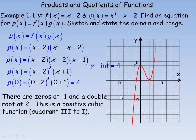So the function starts in the third quadrant, comes up and passes through the x-axis at negative 1. The y-intercept is at 4, so it cuts through at 4. It then comes down, and the double root means it just touches the x-axis at 2 but does not cross it, then goes back up. You could add additional ordered pairs to increase accuracy.